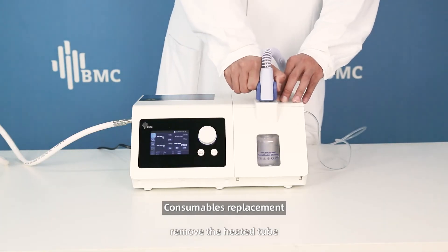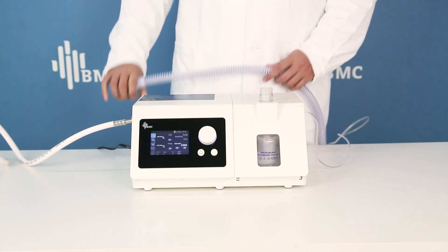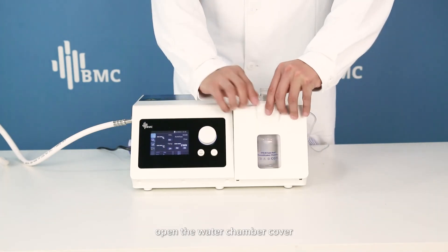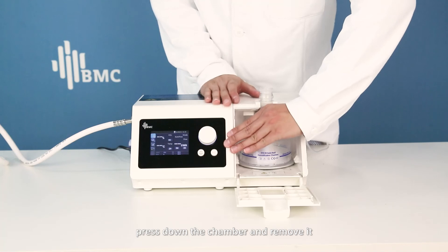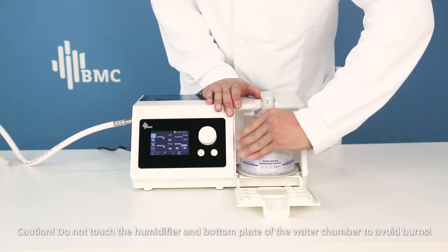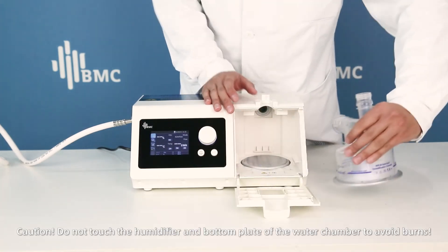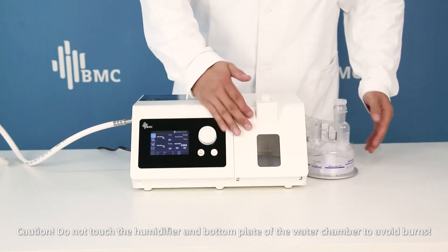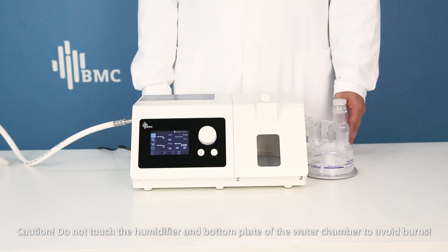Remove the heated tube. Open the water chamber cover, press down the chamber, and remove it. Caution: Do not touch the humidifier and bottom plate of the water chamber to avoid burns.